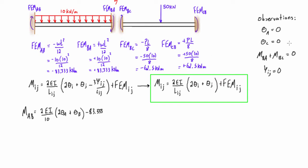We add the fixed-end moment FEM-AB, which is negative 83.333 kilonewton meters. We know from our boundary conditions that θA equals zero, so that term drops out. Simplified, we get M-AB equals 0.2EI times θB minus 83.333.